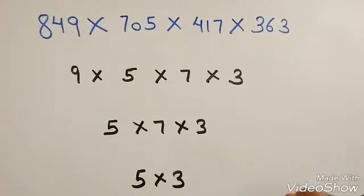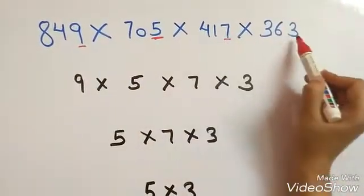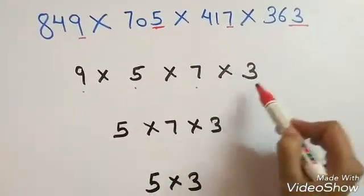Now let's see how to solve such problems. Take the last digit from each number. That is 9, 5, 7 and 3.